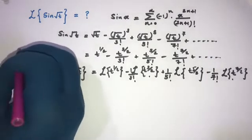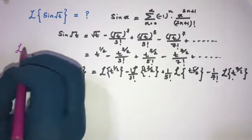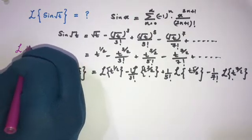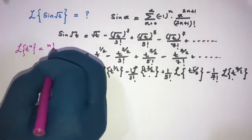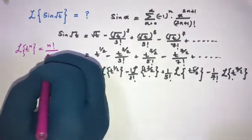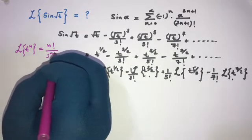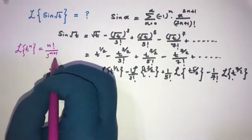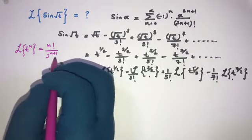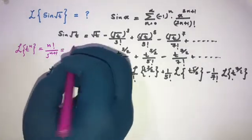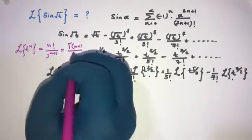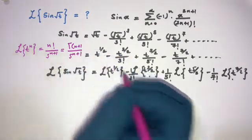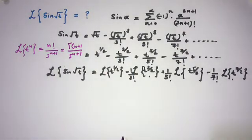We know that the Laplace transform of t^n equals n! over s^(n+1), for s greater than zero. And since n! equals Gamma(n+1), we can write L{t^n} = Gamma(n+1) over s^(n+1). We apply this formula to each term.